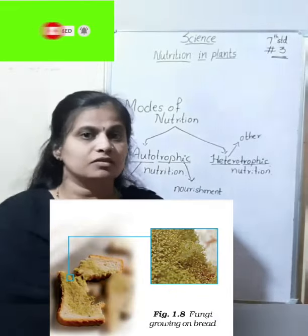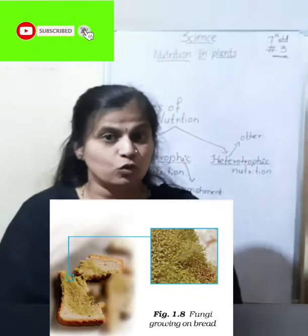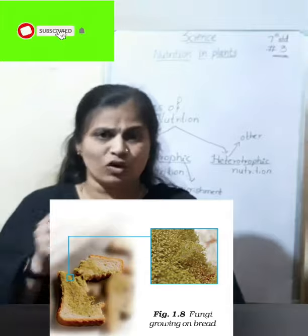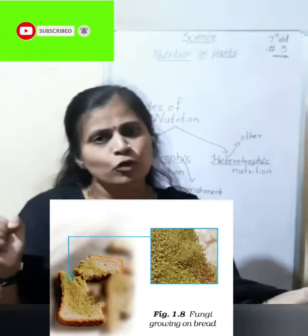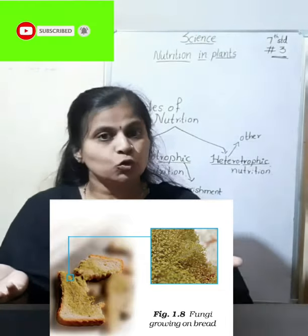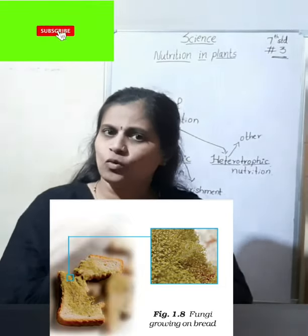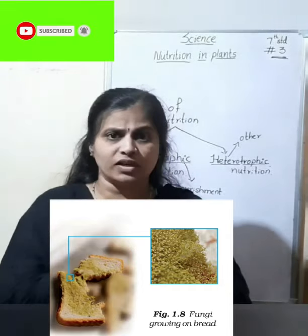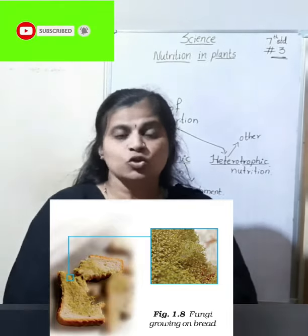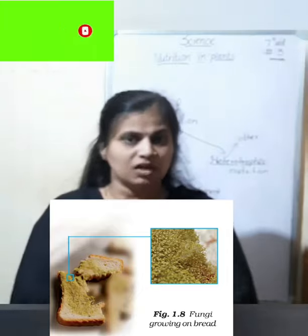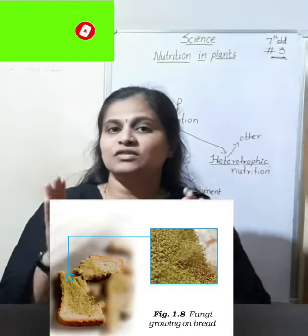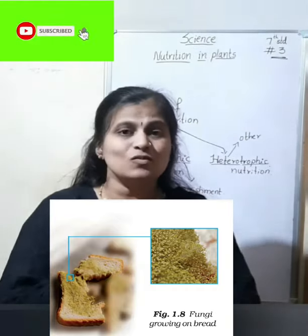In your textbook, activity 1.2 asks you to take a bread slice, moisten it, sprinkle a little water, and keep it aside for 2 to 3 days. After 2 to 3 days, observe it under a microscope or magnifying glass. You will find thread-like structures — those are fungi. The growth of this fungus occurs due to the moist bread or moist area.